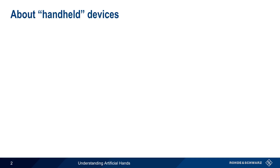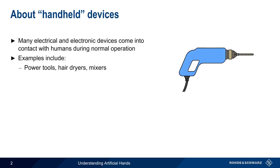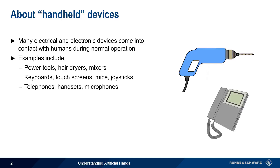Let's start by discussing what's meant by a handheld device. Many devices come into contact with humans during normal operation. This includes electrical devices such as power tools, hair dryers, kitchen appliances, etc. But it also includes electronic devices such as keyboards, touch screens, and mice, as well as telephones, handsets, and microphones. Many medical or patient-coupled devices would also fall into this category.